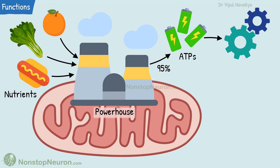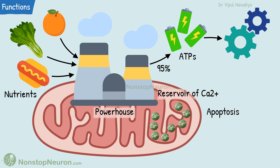About 95% of total ATPs used by the cells are produced in mitochondria. Apart from this, the mitochondria also serve as a reservoir of intracellular calcium, and also participate in apoptosis, which is a programmed cell death.